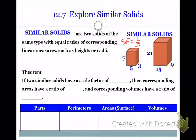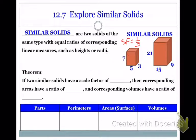That scale factor has to hold true for any other measure. We use that to help find the missing side. So if we didn't know the height of this prism and we knew the height of the other one, we could go 7 to x has to equal the scale factor, which is 1 to 3. Cross multiply and solve to find that side is 21. But now we're going to take a look at surface area and volume.